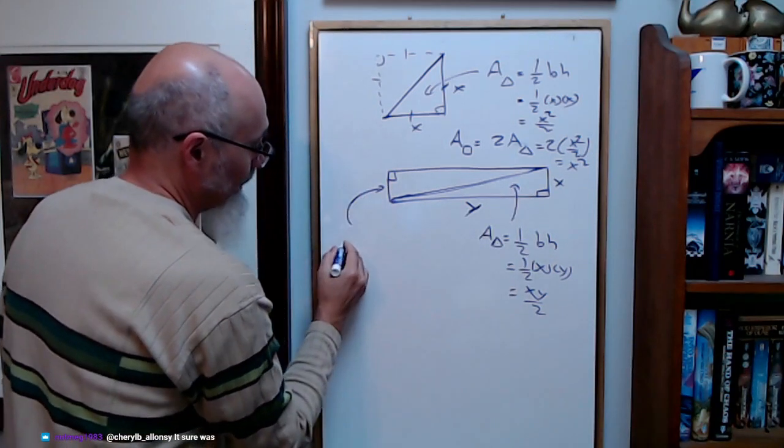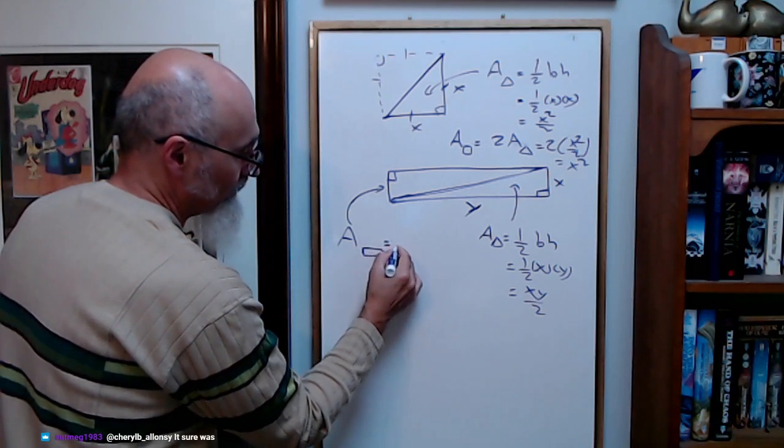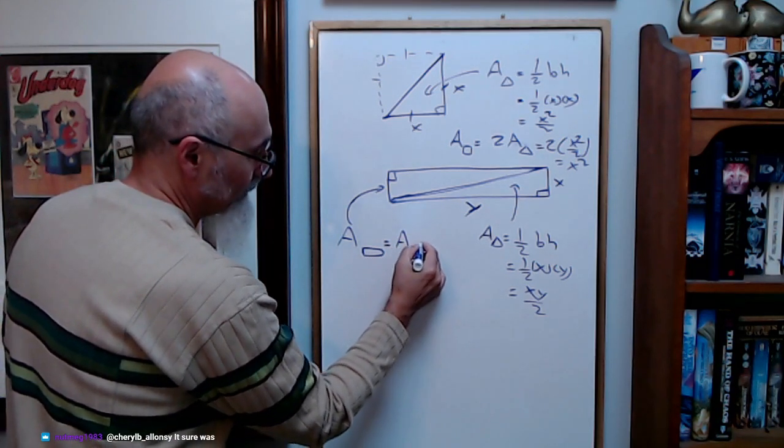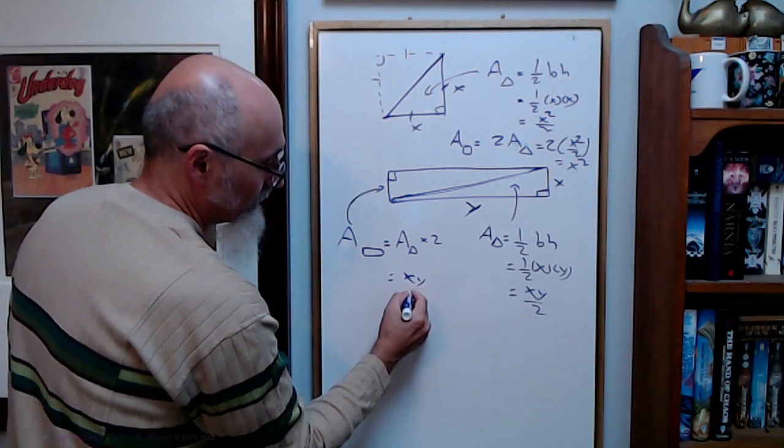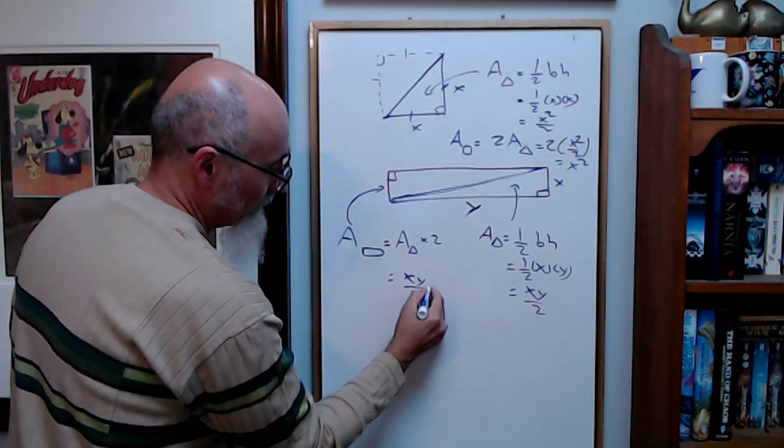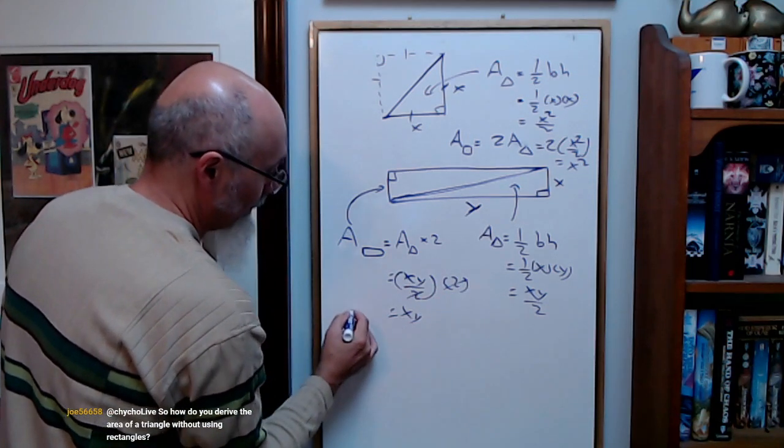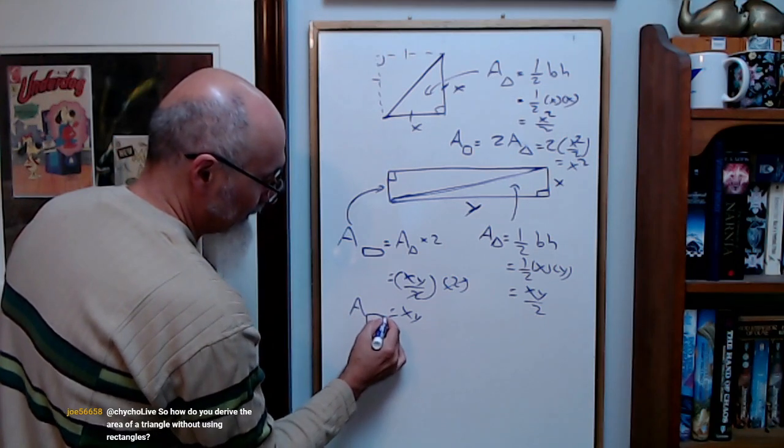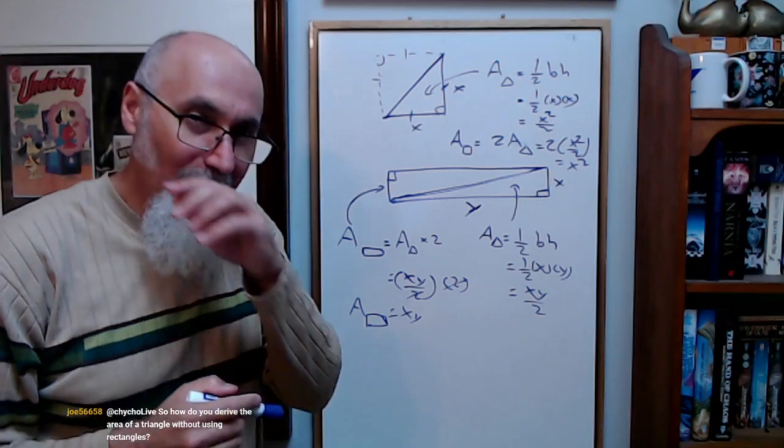So the area of this rectangle—this is the area of this triangle, and the area of the whole rectangle is area of the rectangle equals area of the triangle times two. Well, area of the triangle is X times Y over two times two, and two kills two, which is just X times Y. So area of a rectangle is base times height.